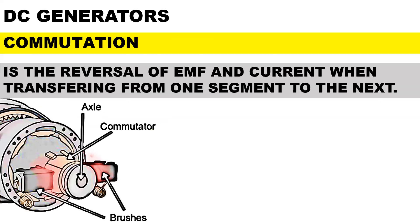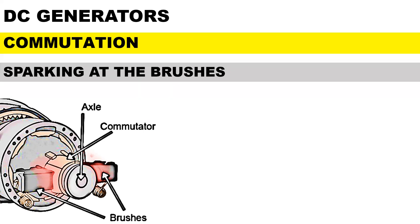For commutation, it is defined as the reversal of EMF and current when transferring from one segment to the next through the short-circuited coil, and this happens when the commutator is moving from one segment to the next. The negative consequences of commutation are sparking and heat generated at the brushes.